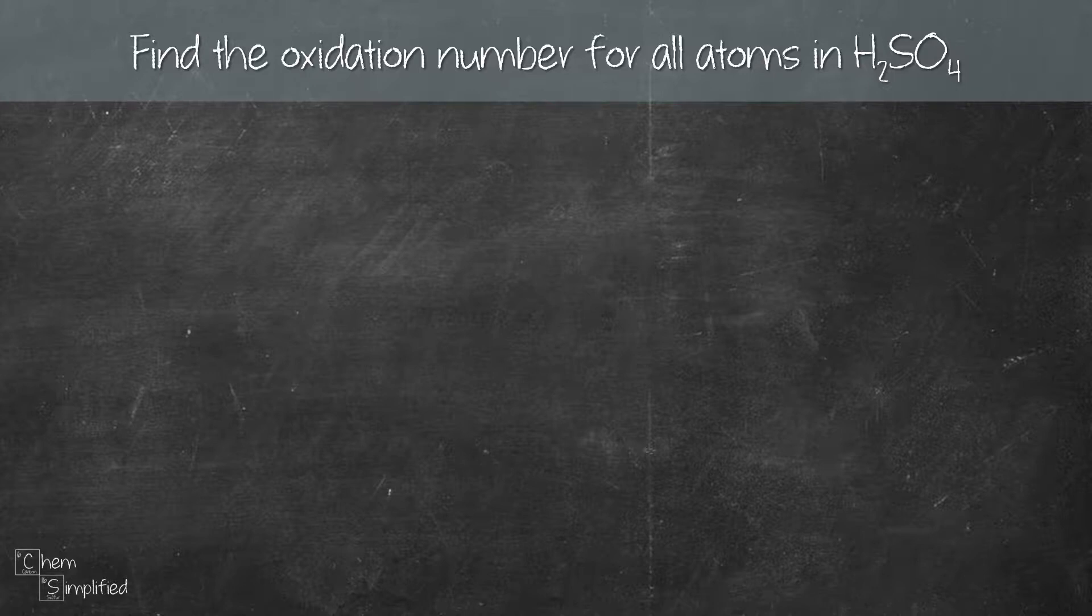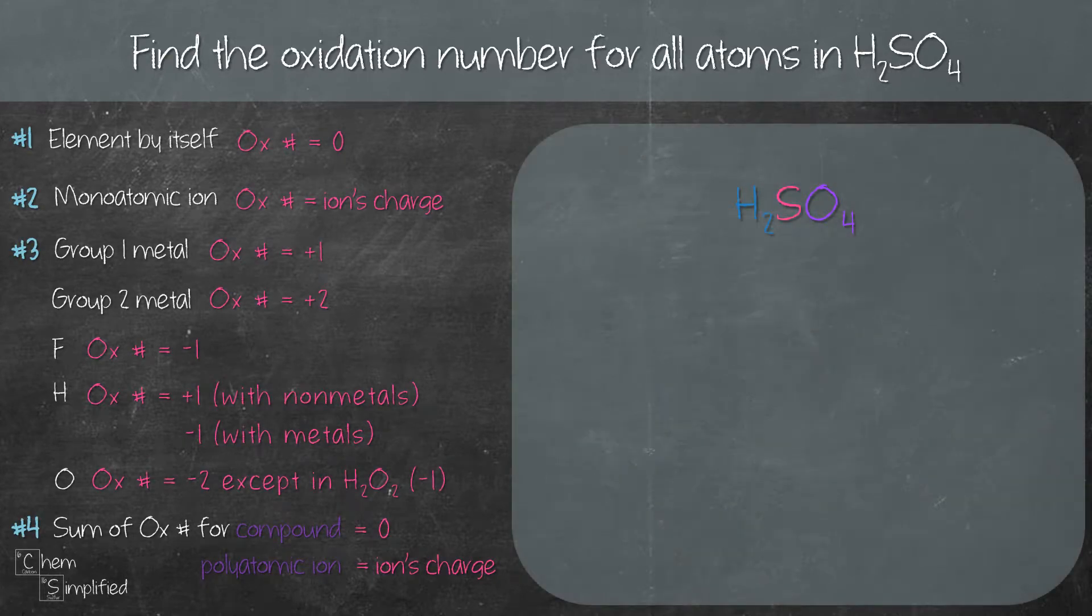We can easily find their oxidation numbers using these rules. According to rule number three, the oxidation number of H in a compound is plus one, while the oxidation number of O in a compound is minus two.